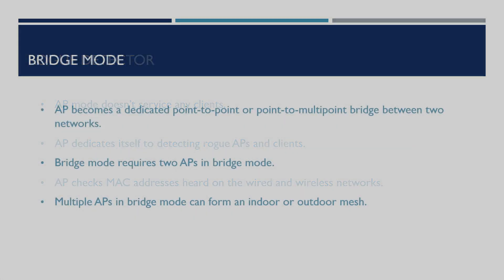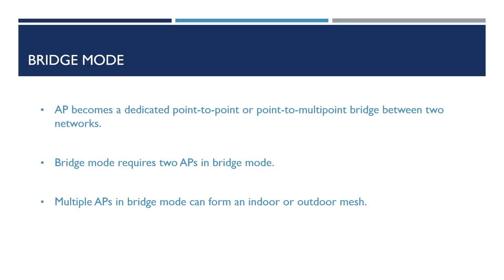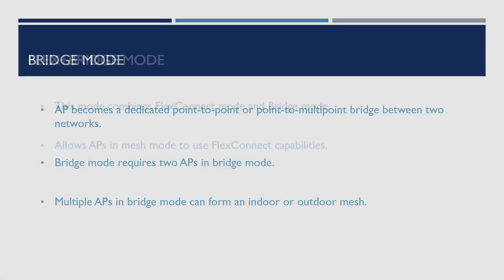Bridge Mode is used as a dedicated point-to-point or point-to-multipoint bridge between two networks. This allows two remote networks to connect to each other remotely via two bridge APs. In order for the bridge to be formed between the two networks, the APs must both be in Bridge Mode. In addition to this, APs in Bridge Mode can be used to form an indoor and outdoor mesh network.